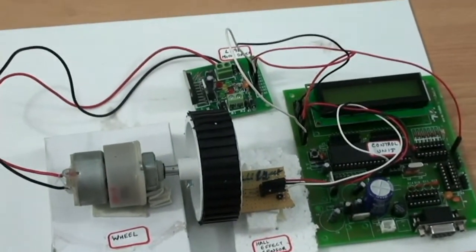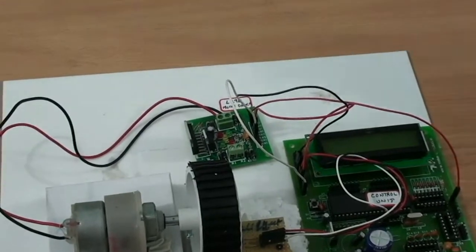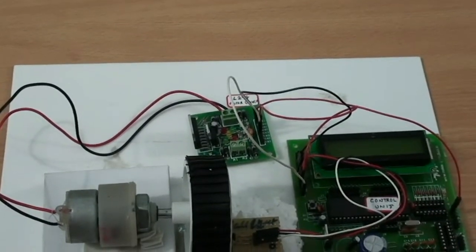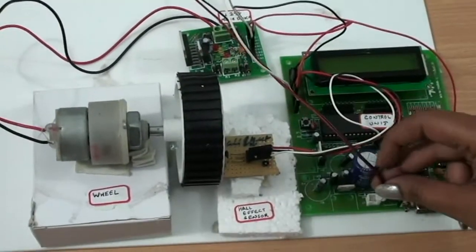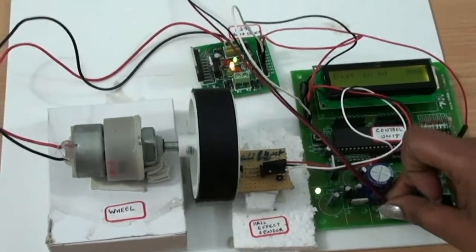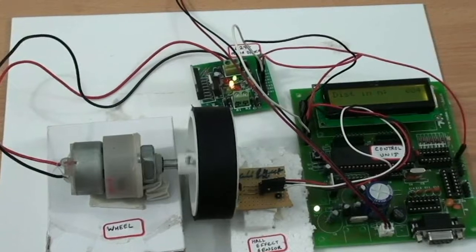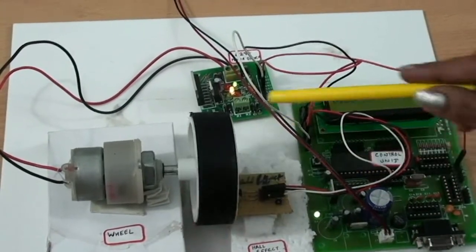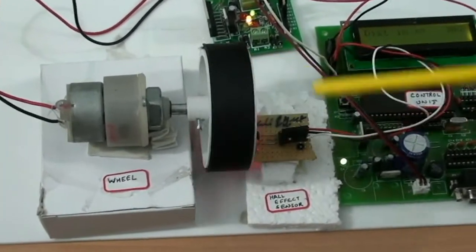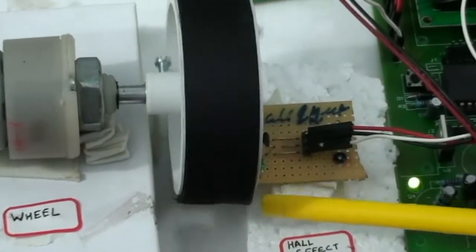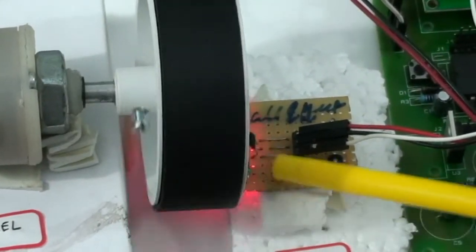Now let me show you the demo of this. When we give the power supply, the wheel starts rotating. You can see when the magnetic field comes near the hall-effect sensor, the hall-effect sensor detects the magnet. You can see the red light there.